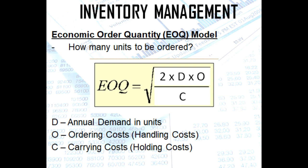D stands for annual demand in units. O stands for ordering costs — in other books they use handling costs as the term. And C is the carrying costs or the holding costs. This formula answers the question: how many units to be ordered.